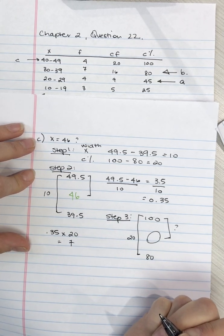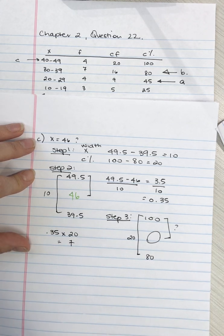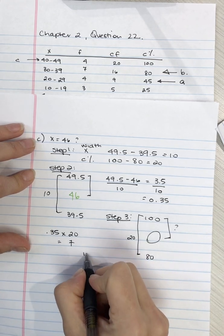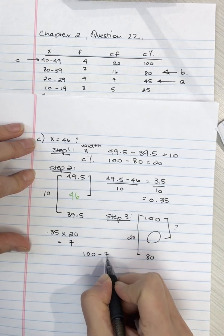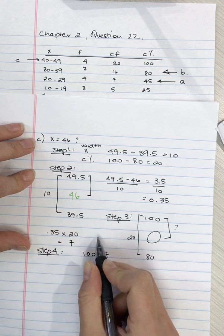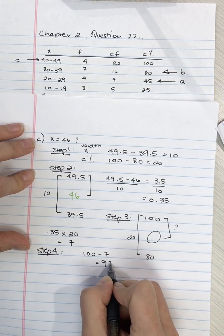And so what we now do is we need to take 100 minus 7 for step 4. And that equals 93.